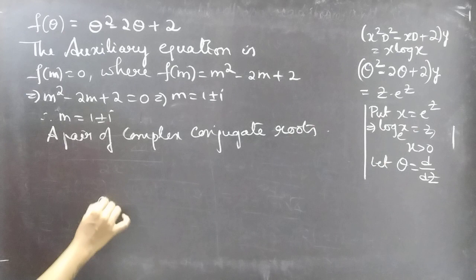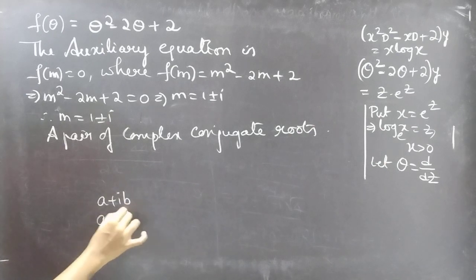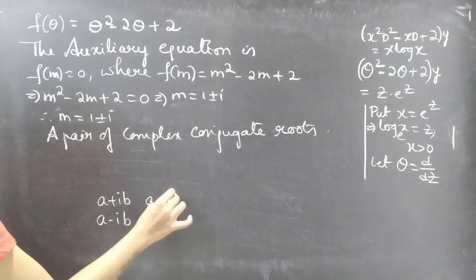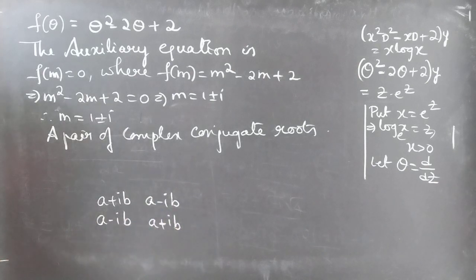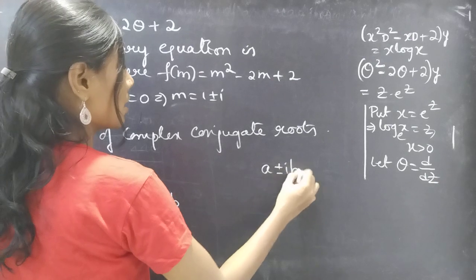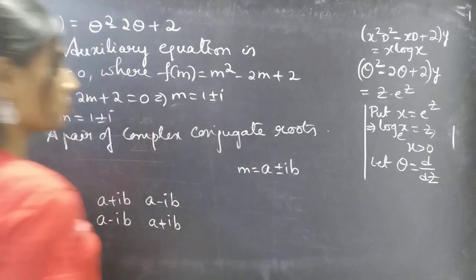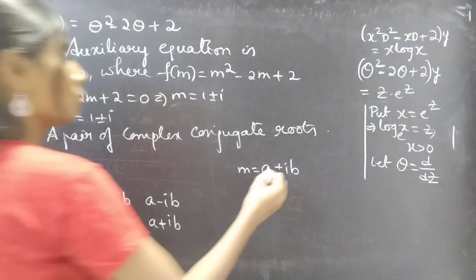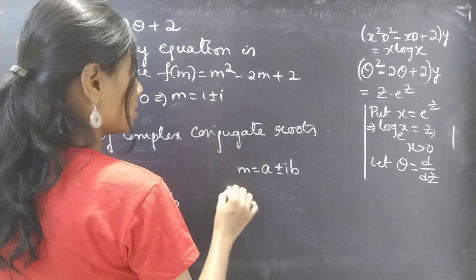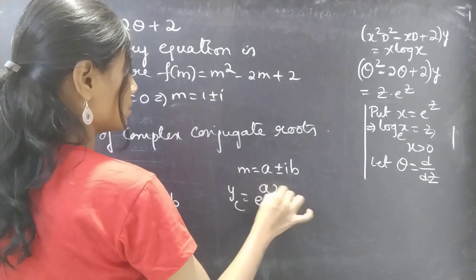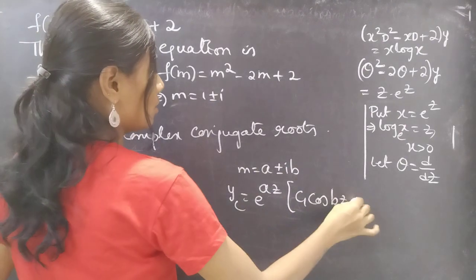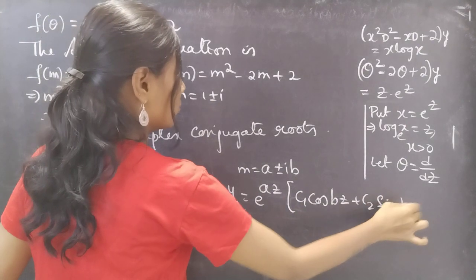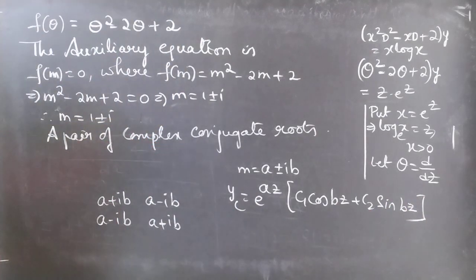We know that a plus ib and a minus ib are complex conjugate pairs. When we get m equals a plus or minus ib, the complementary function yc takes the form: e to the az times c1 cos(bz) plus c2 sin(bz). Let's now write yc using this formula.